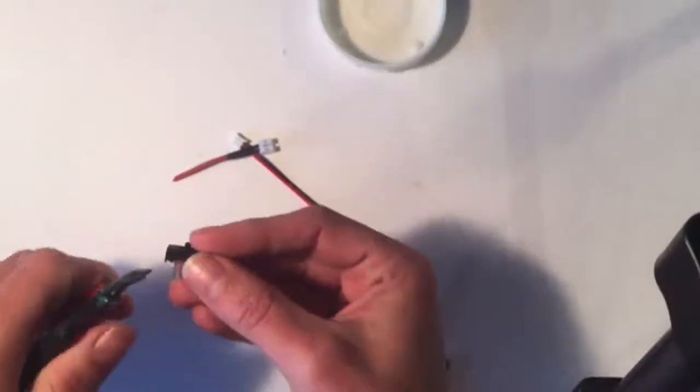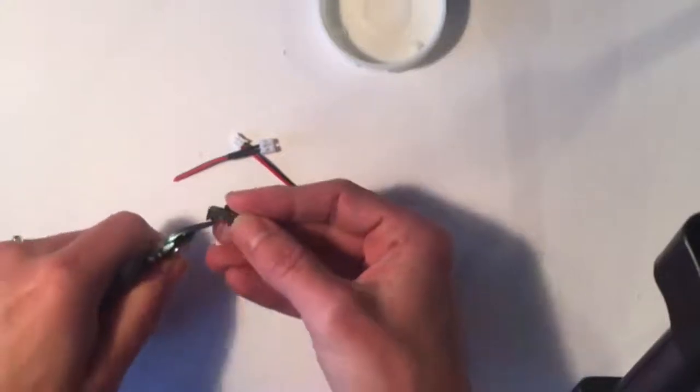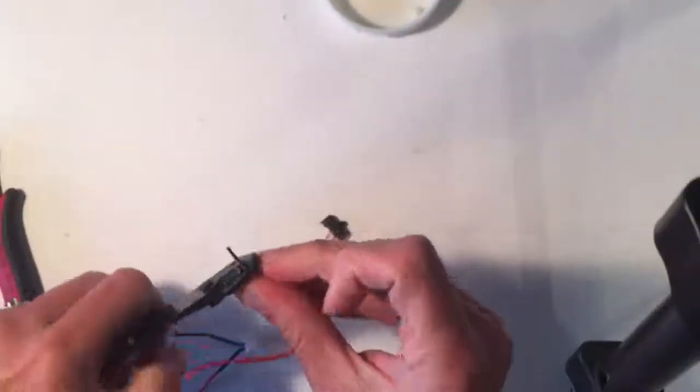Trim your battery extension cable to a few inches and trim off one of the outside legs from your on-off switch.